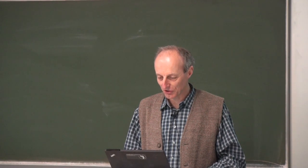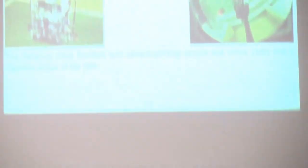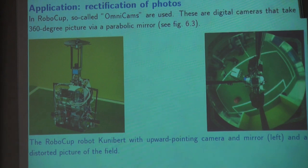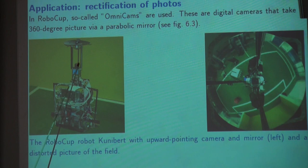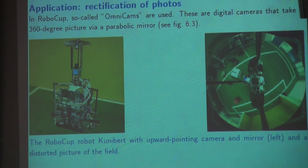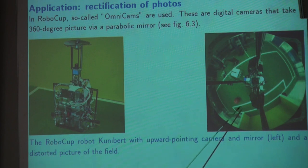Now let me show you a little bit about how we developed this robot. This is a picture of the robot where you can see how technical it is. We will now focus on this video camera. This video camera looks straight up into the air, but there is a mirror — a parabolic mirror — and due to this parabolic mirror, we get a 360-degree view of the environment.